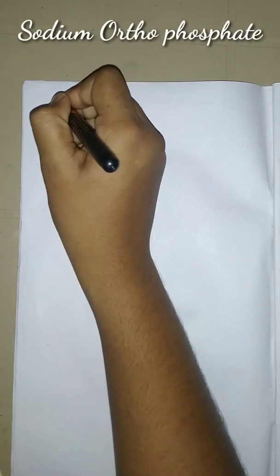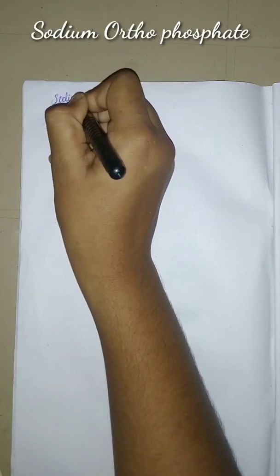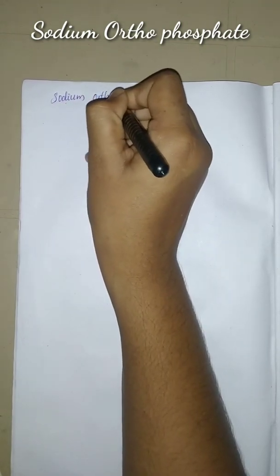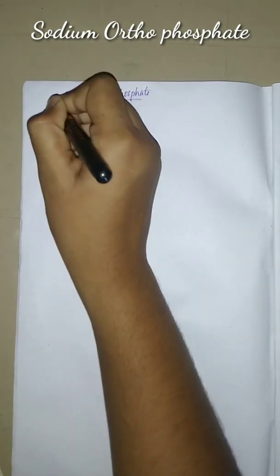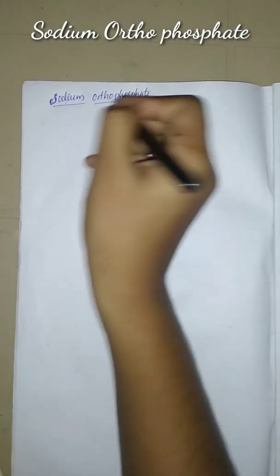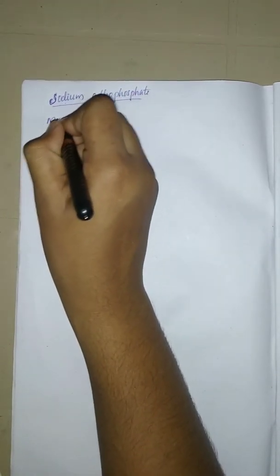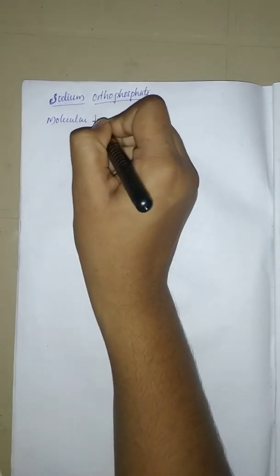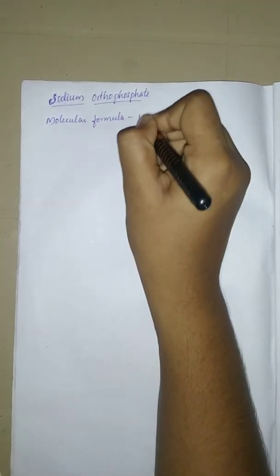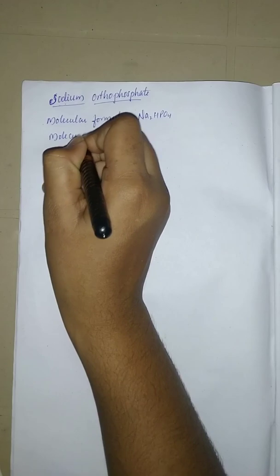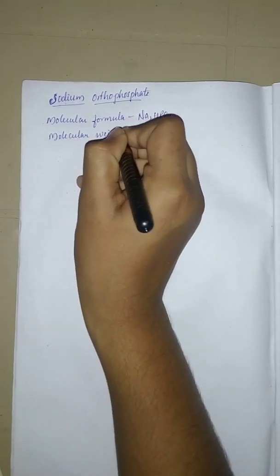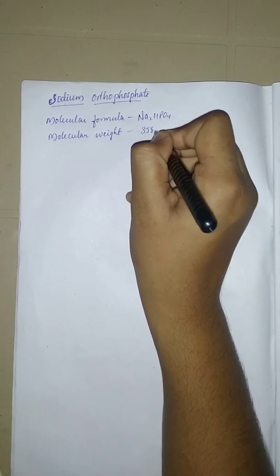Hey guys, I am back to explain another topic in cathartics — that is sodium orthophosphate. The molecular formula of sodium orthophosphate is Na2HPO4, and its molecular weight is 358.14.